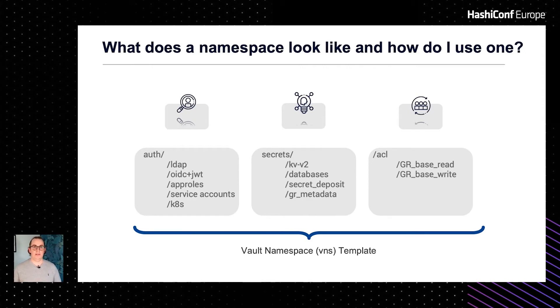Then lastly, we created the secret deposit. Because the initial implementation of Vault had everybody in the root namespace, they developed a culture of cross secret engine communication. This meant that secrets were being shared between teams inside Vault, which flies in the face of what Vault should be used for. Being the IAM team and understanding that these habits would take a long time for teams to unlearn, we provided them with the ability to airdrop secrets from one namespace to another. If the database team wrote into the secret deposit path, they would not be able to read back that secret — but the owner of that namespace would only be able to read it.